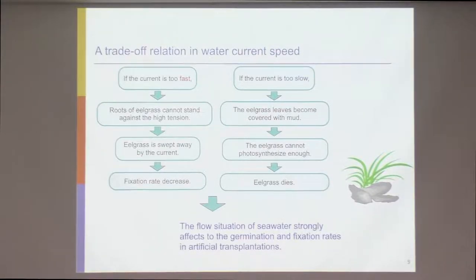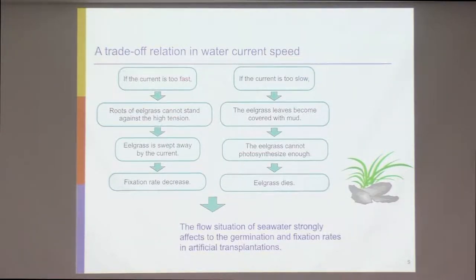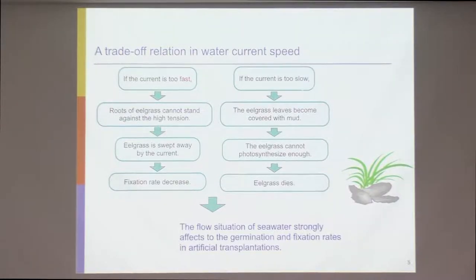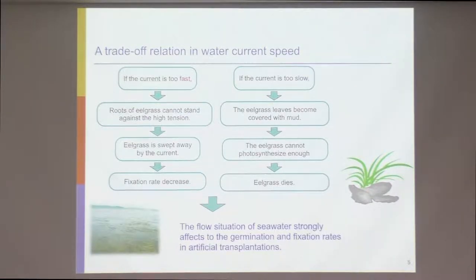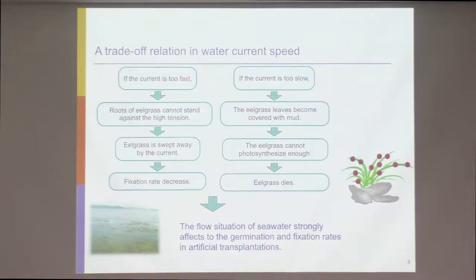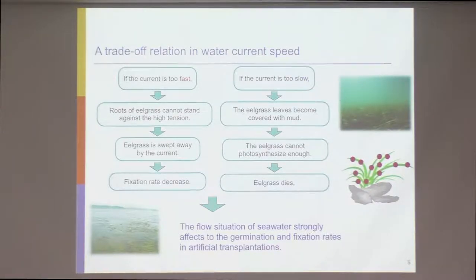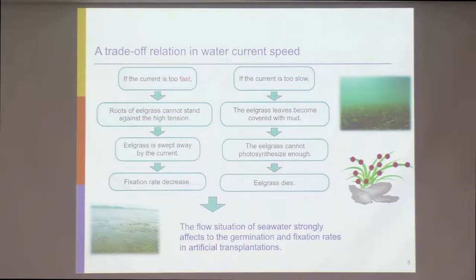We found there is a trade-off relation in water current speed. If the current is too fast, the roots of the eel grass cannot withstand the high tension and the eel grass is swept away. On the other hand, if the current is too slow, the eel grass leaves become covered with mud, and the eel grass cannot photosynthesize enough and dies. So the flow situation of sea water strongly affects the germination and fixation rates in artificial transplantation.